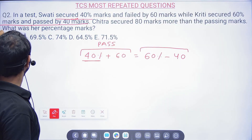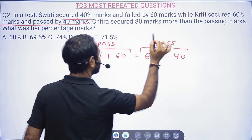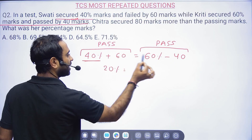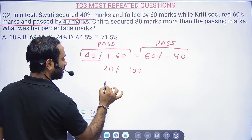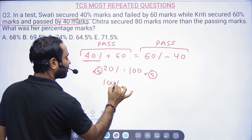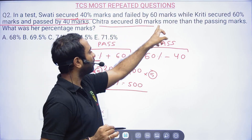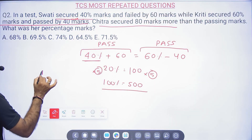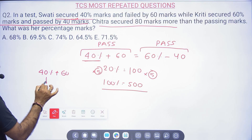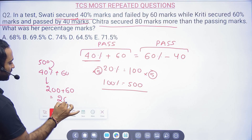If you subtract those 40 extra marks: 60% minus 40 marks corresponds to passing. Bringing the 40 to the other side gives 60% – 40% = 20% equals 100 marks. Multiplying both sides by 5: total marks = 500. Now Chitra secured 80 marks more than the passing marks. Pass marks = 40% of 500 + 60 = 200 + 60 = 260.